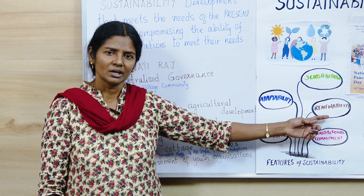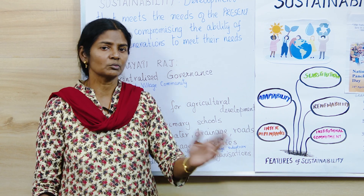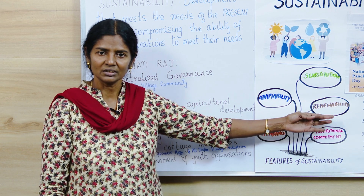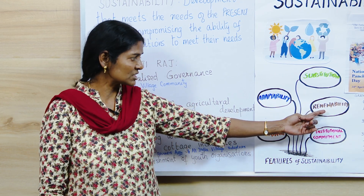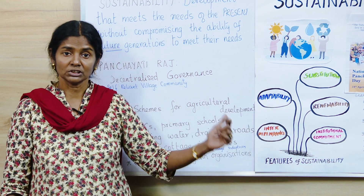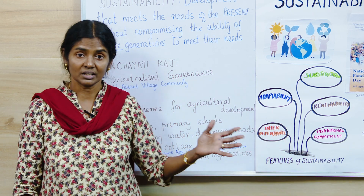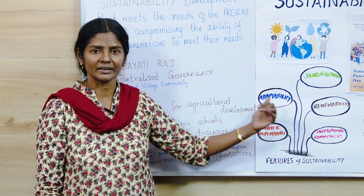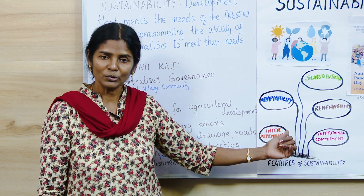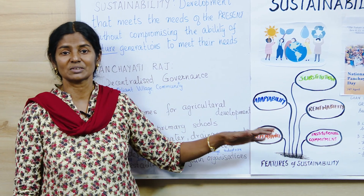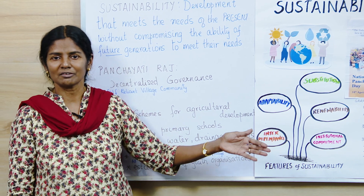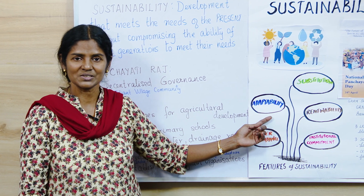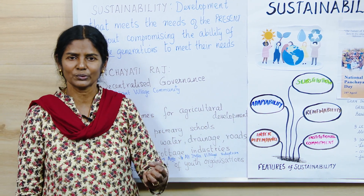The second principle is renewability. We can take old newspapers and convert them into beautiful bags — that's renewable. We can convert waste into wealth; that is renewability. The third principle is adaptability. There was a time when everyone wanted luxury and multiple cars, but now we can adapt — for example through carpooling. Each person may have a car, but we don't all need to drive separately.